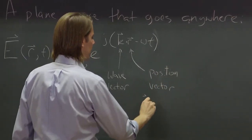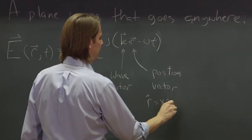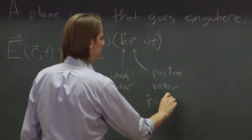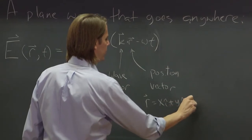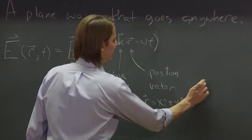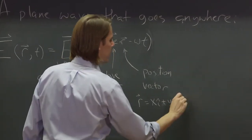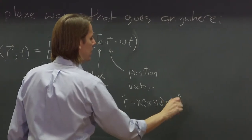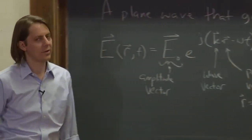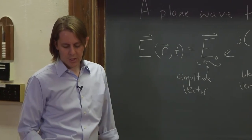So r equals x position on the i-hat plus y j-hat plus z k-hat. That is the unit vector of z, not the wave vector.